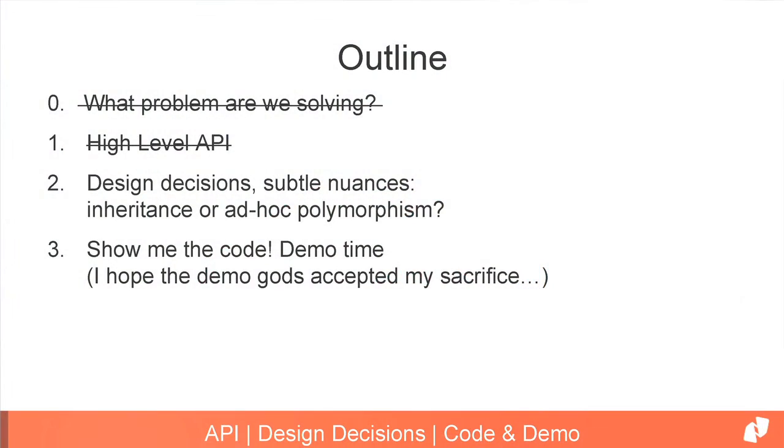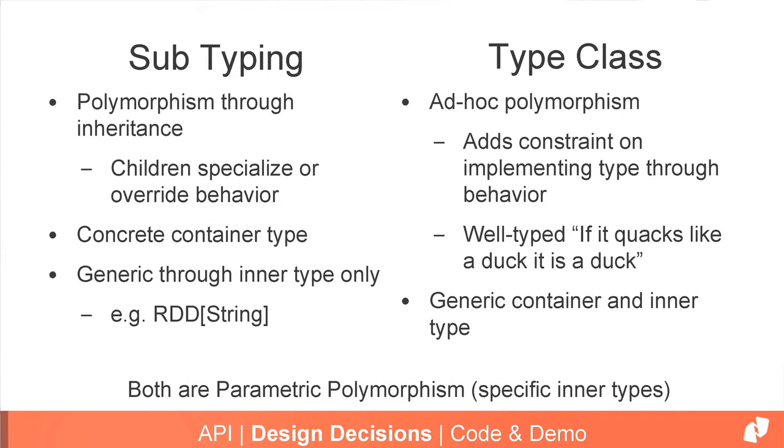Moving on to some design decisions — I'm going to spend a good chunk of time talking about the difference between subtyping and the type class approach. In subtyping, the idea is polymorphism through inheritance: if you want different behavior, a child can extend some class and either specialize or completely override the implementation. Everybody's familiar with how the Scala collections library has a big subtyping hierarchy — Traversable, Seq, and so on all going up the tree.